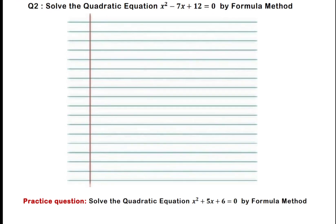Hopefully you have understood question number 1 — solve the practice question. Now we will move to question number 2: solve the quadratic equation x squared minus 7x plus 12 equals 0 by the formula method.